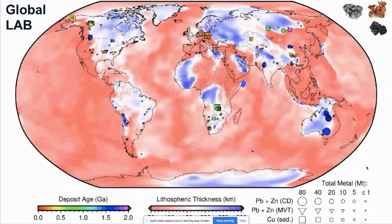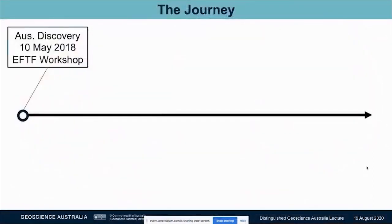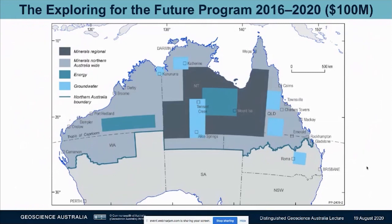For the rest of this talk, I want to focus on how this was discovered. The journey starts on the 10th of May 2018, at a workshop for the Exploring for the Future program. The program was initiated by the government to look at the potential for energy, minerals and groundwater across northern Australia, and it cost $100 million. It was so successful that the government pledged to extend it for another four years at a cost of $125 million.